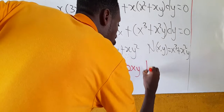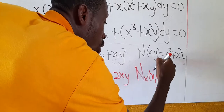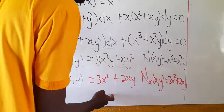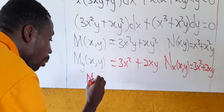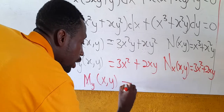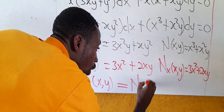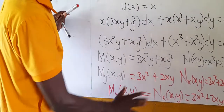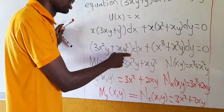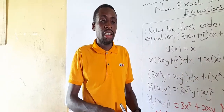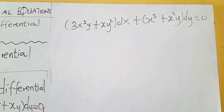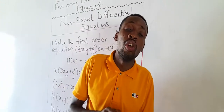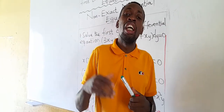Both partial derivatives equal 3x² + 2xy, so our differential equation is now exact. We pick this exact equation and follow the steps for solving exact differential equations. We have succeeded in making our non-exact equation exact.